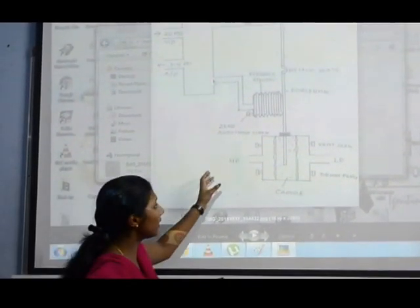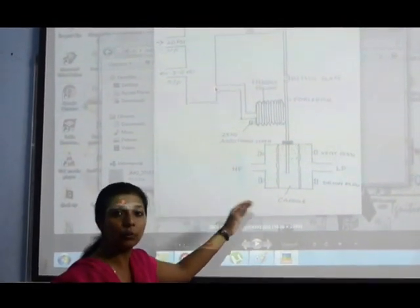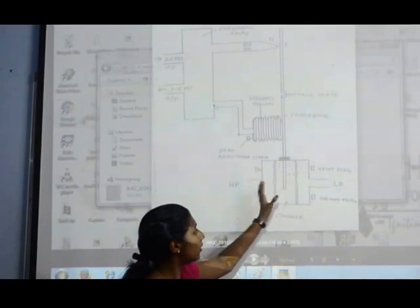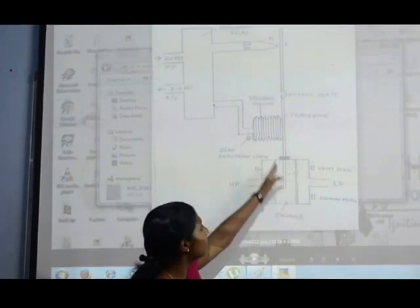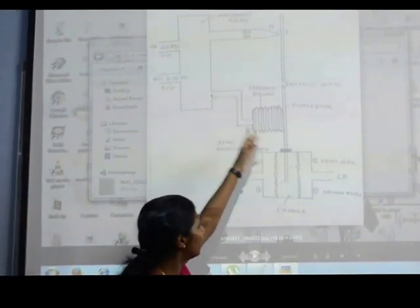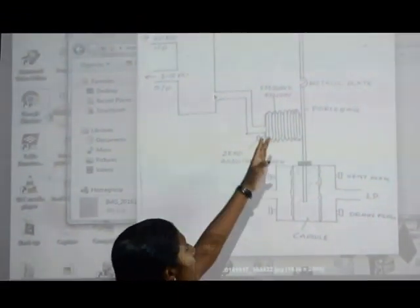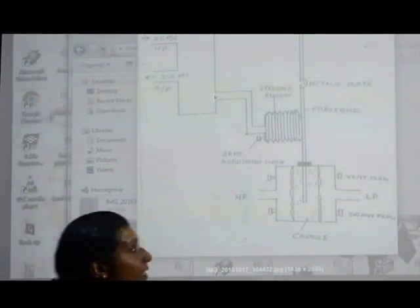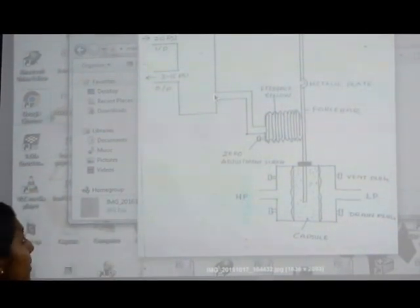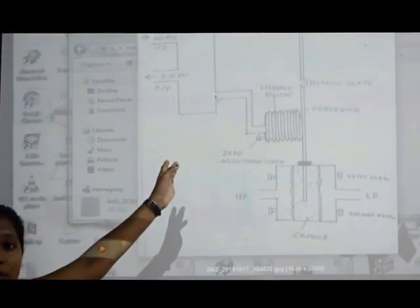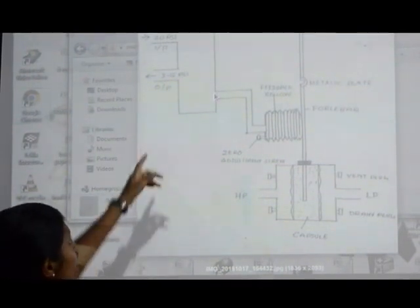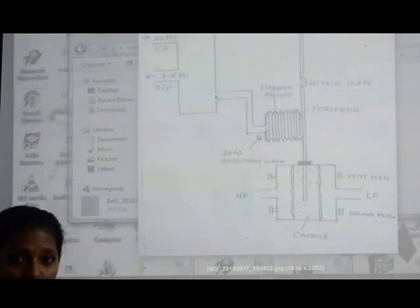If we are giving the 100% output or the maximum output, this capsule will be extended to this side and will directly act on the force bar. That flapper will be coming near to the nozzle side, and that means the leakage on the flapper nozzle side will be very much reduced. We are able to get a 15 psi output.